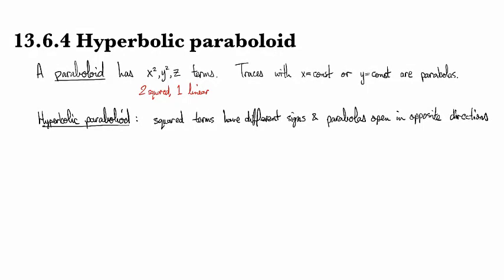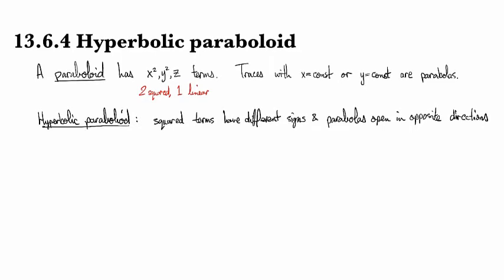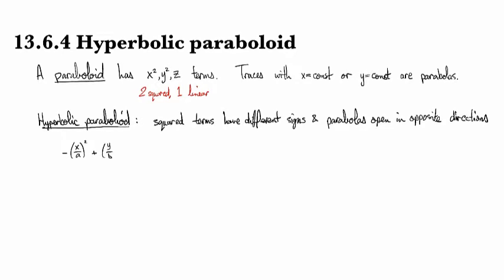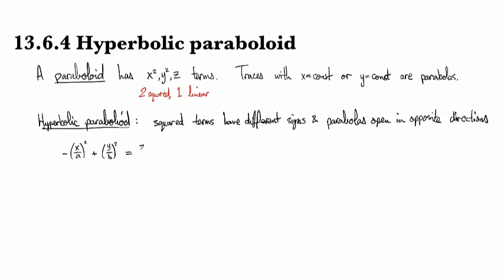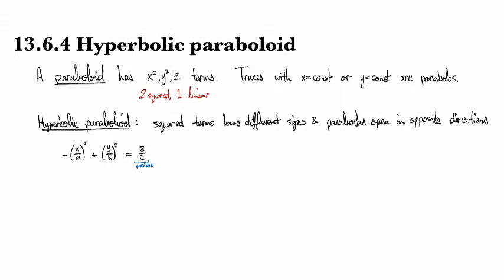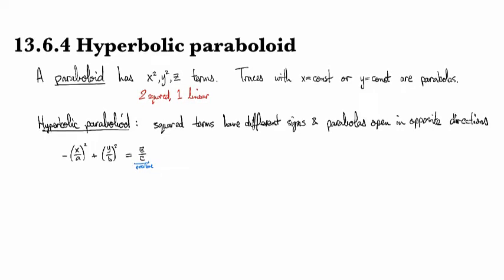Okay, so let's see what's going on with an example. So a hyperbolic paraboloid can be written in general form x over a squared with a minus sign and y over b squared with a positive sign equals z over c. So I've written it here so that the linear term is positive, which I can always do by multiplying through by minus one.